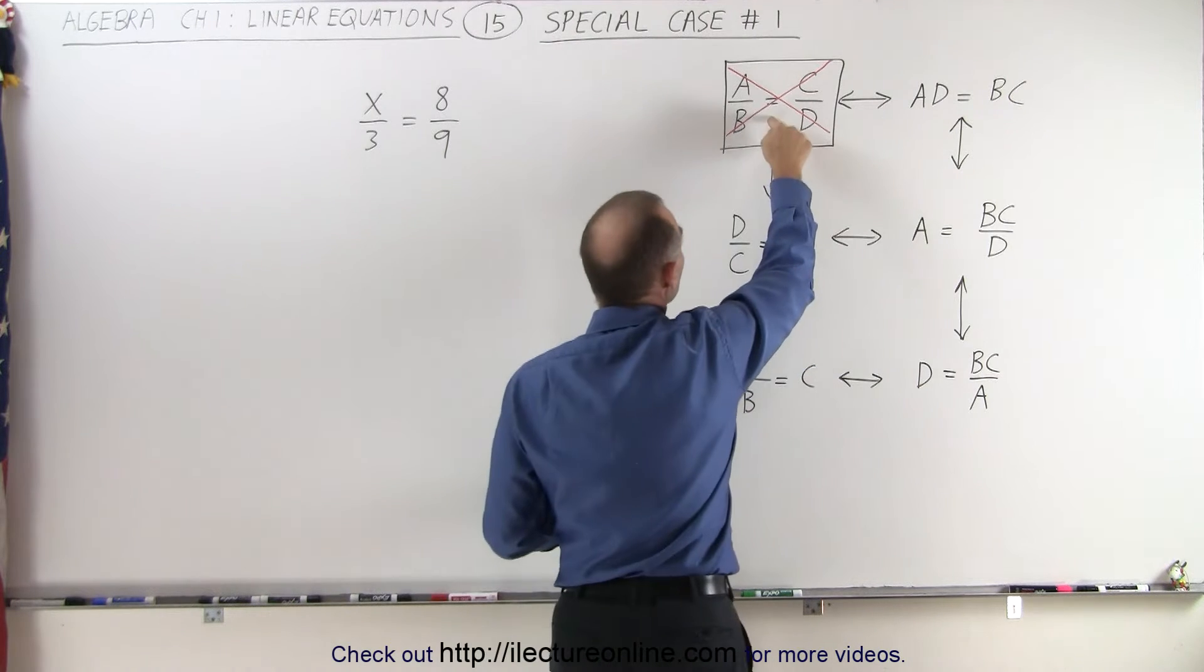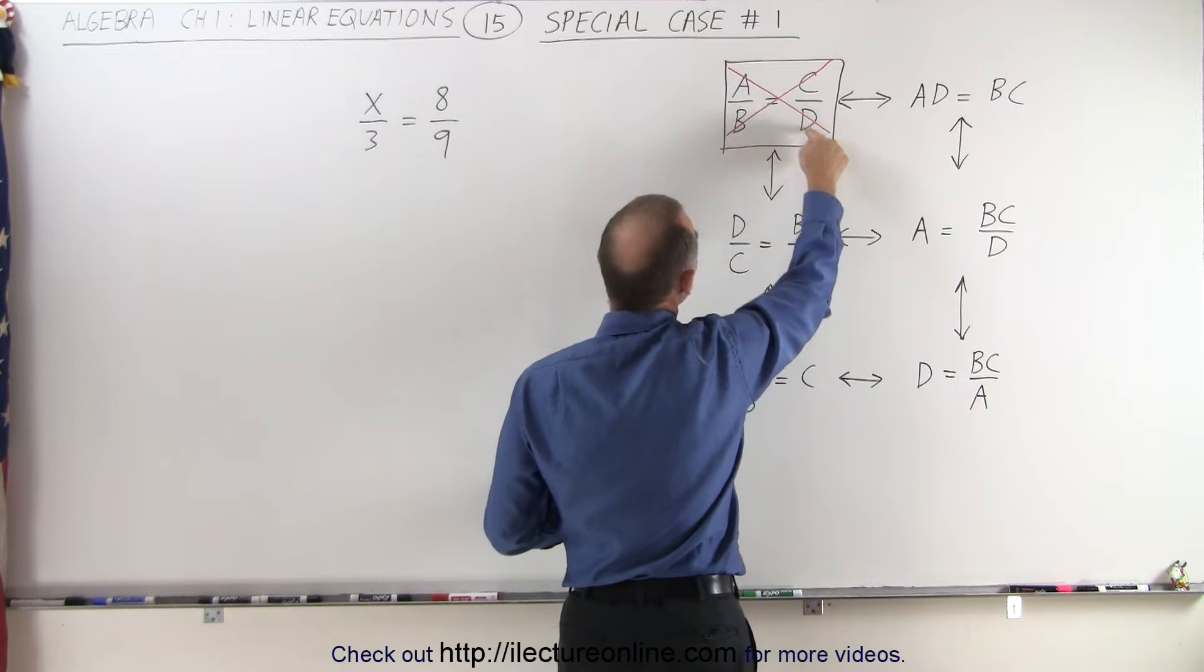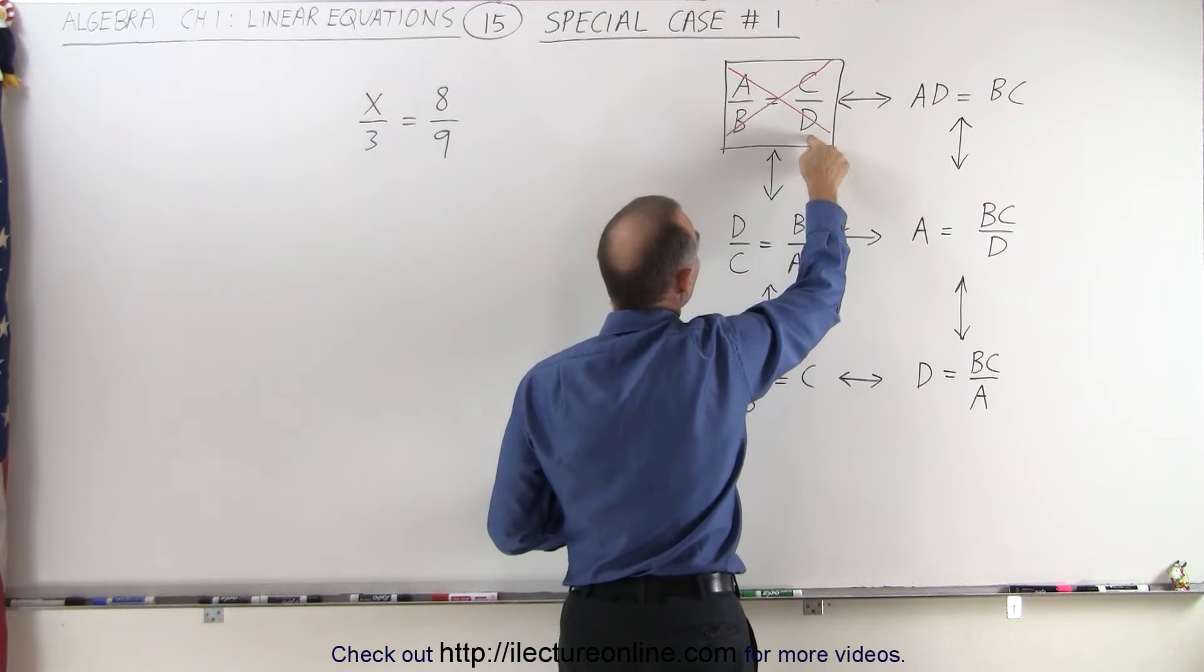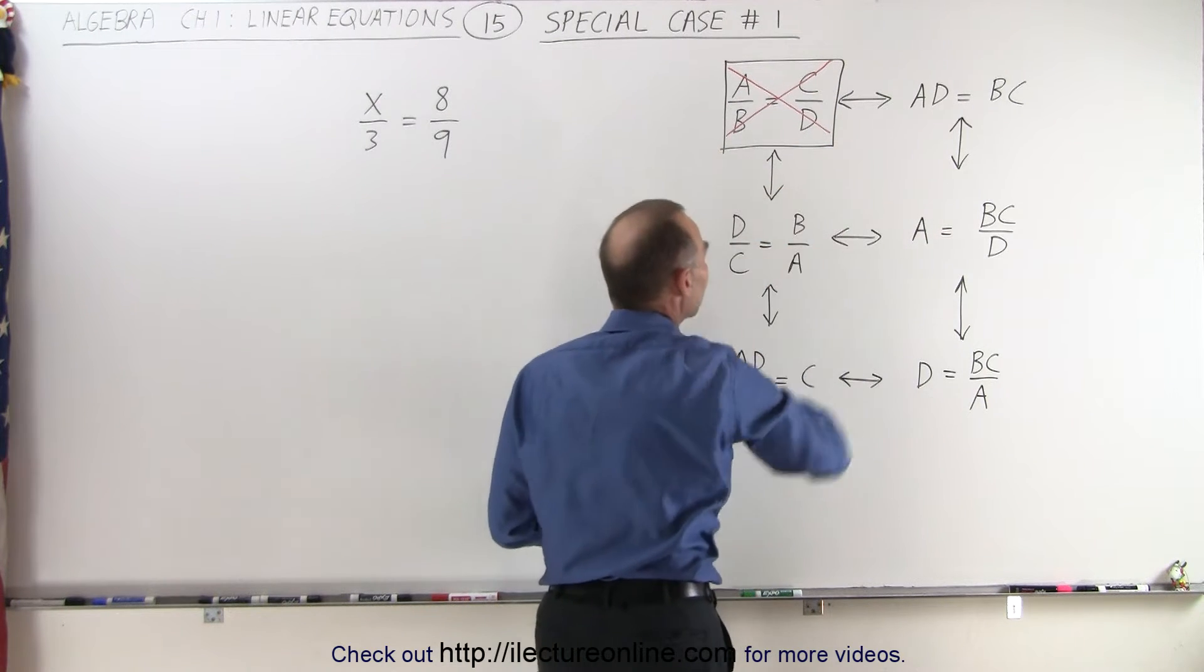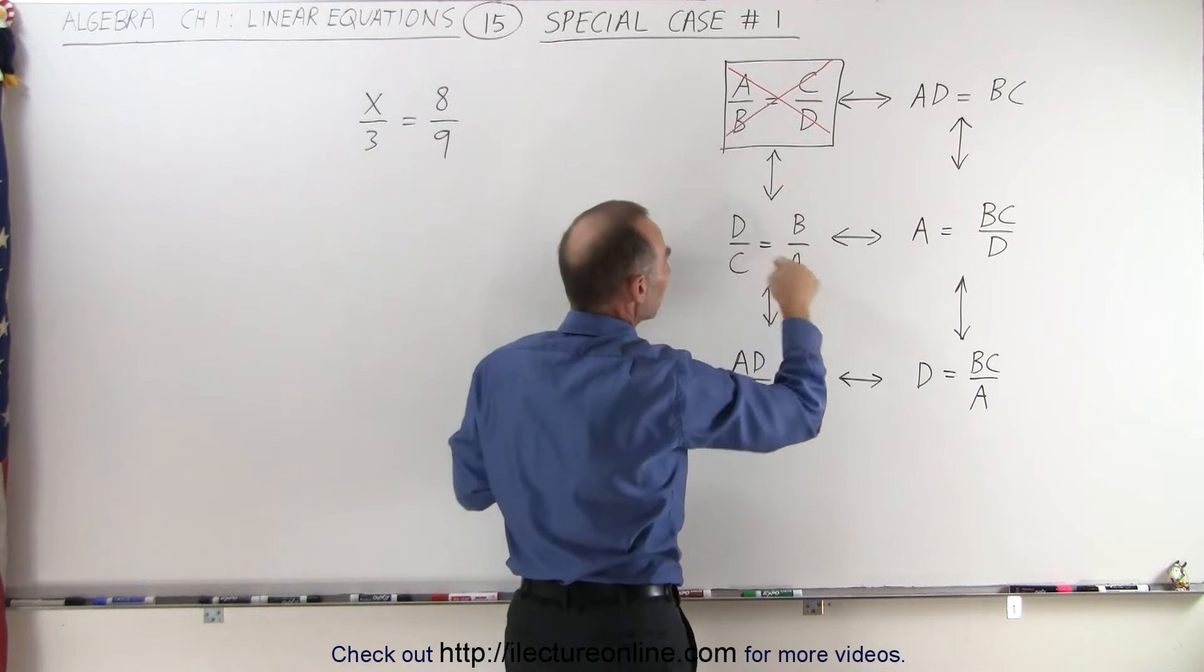In other words, we can go from here to here, and notice I move the D up here and the A down here, I move the B up here and the C down here, so the fractions now look like this. We simply move everything across the diagonal.